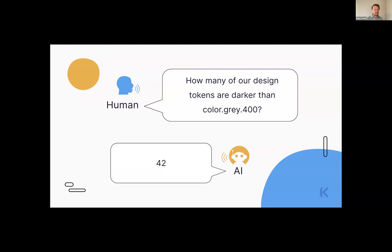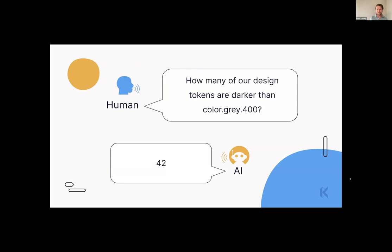Design systems love constraints, AI loves constraints — therefore AI is going to love design systems. These things will work very well together. As for getting your design system ready for AI: you kind of already have. You've already constrained a bunch of choices, made structured decisions that AI will be able to pick up. Keep doing all the great practices you already know — keep fighting the fight against snowflake one-off colors.